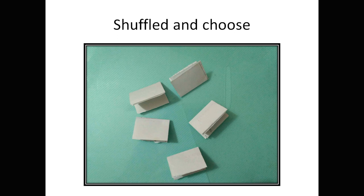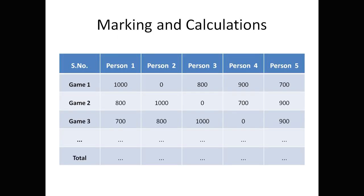In this way, the value for Ramudu may be one thousand or zero, and Sita will be zero or one thousand — that depends. We need to give the markings accordingly. For Lakshmanudu it's nine hundred, for Bharatudu it is eight hundred, and for Dasaradudu it is seven hundred. Those are constants. In this way, the game will go ahead and we need to mark and calculate like this.